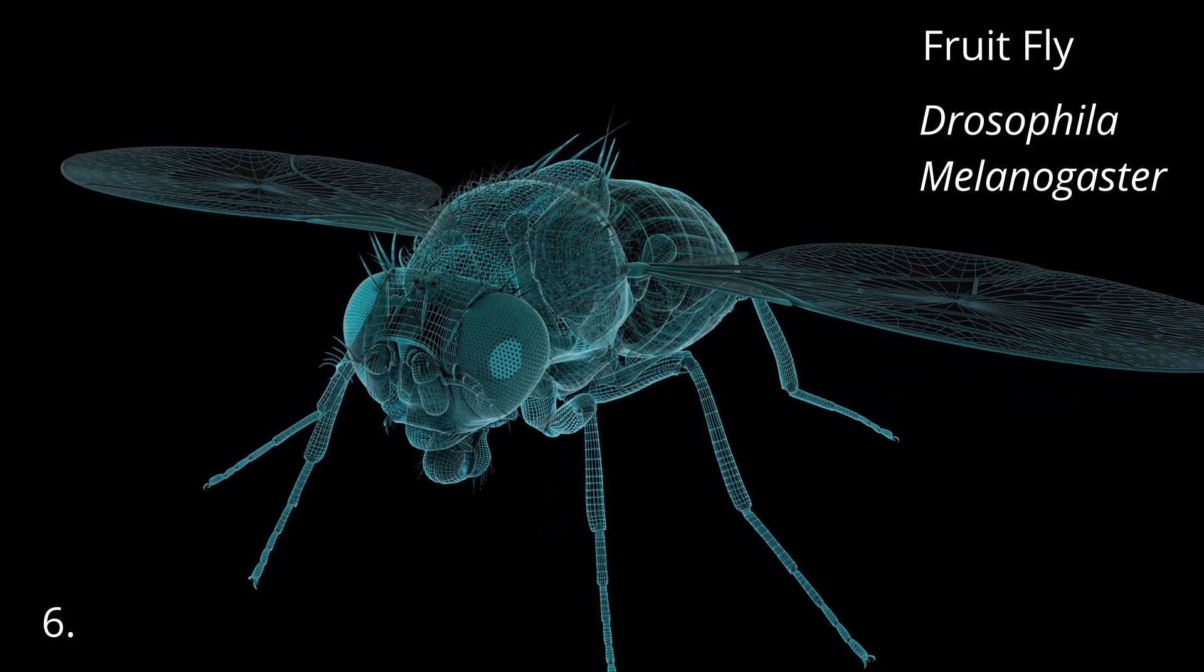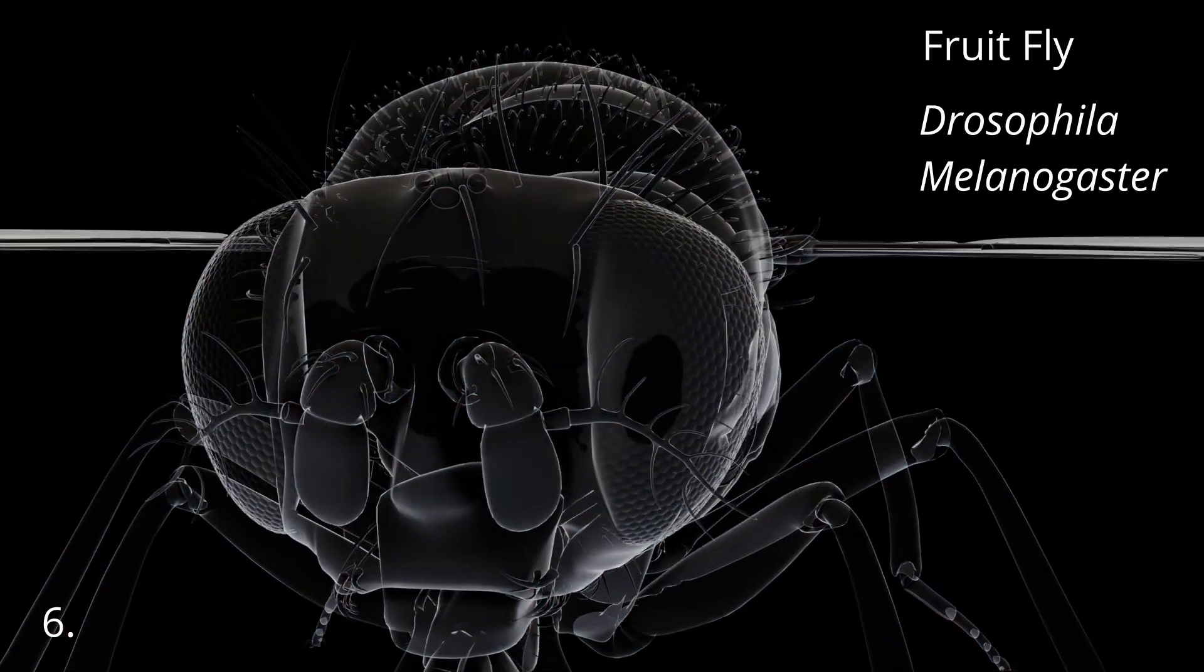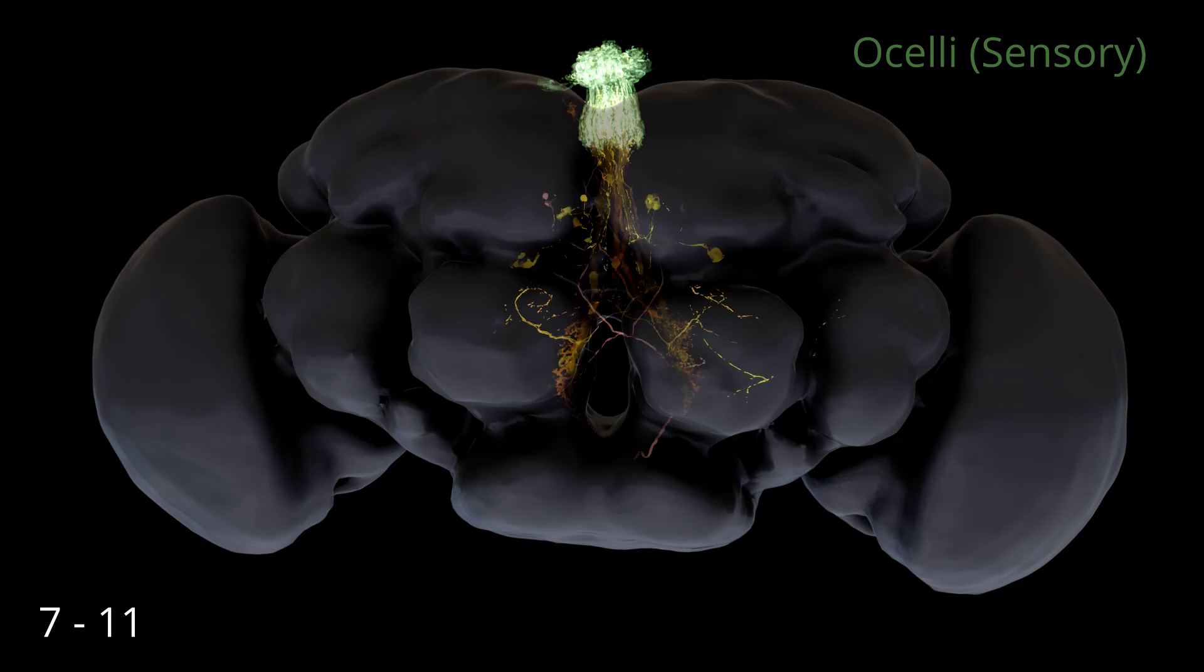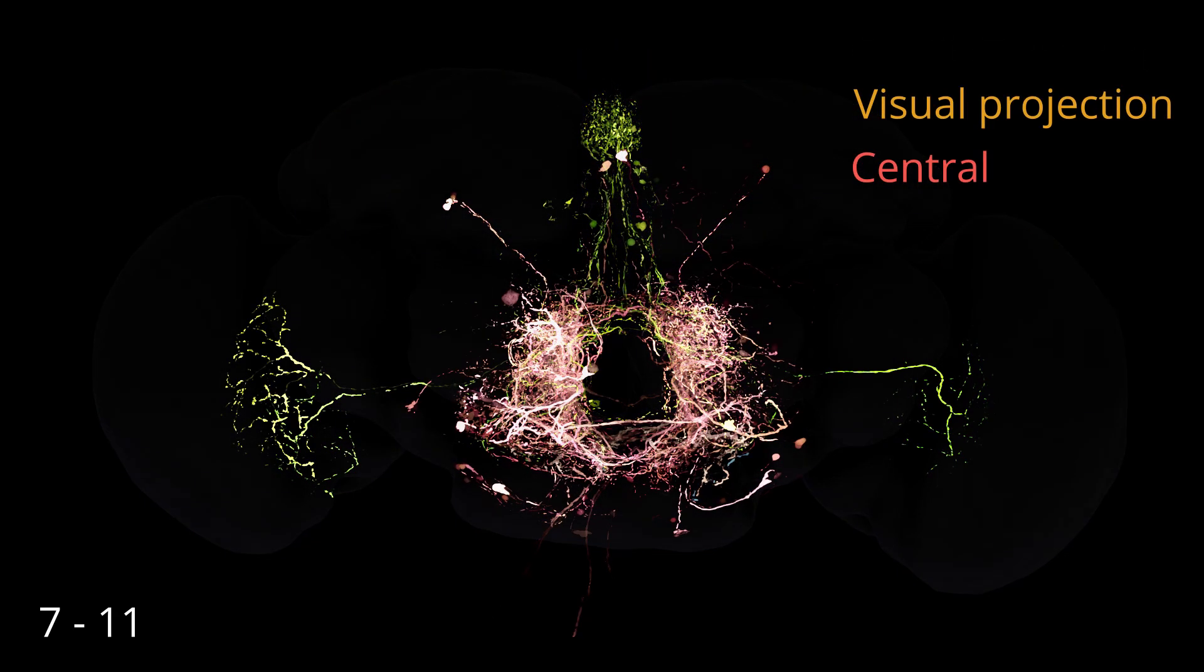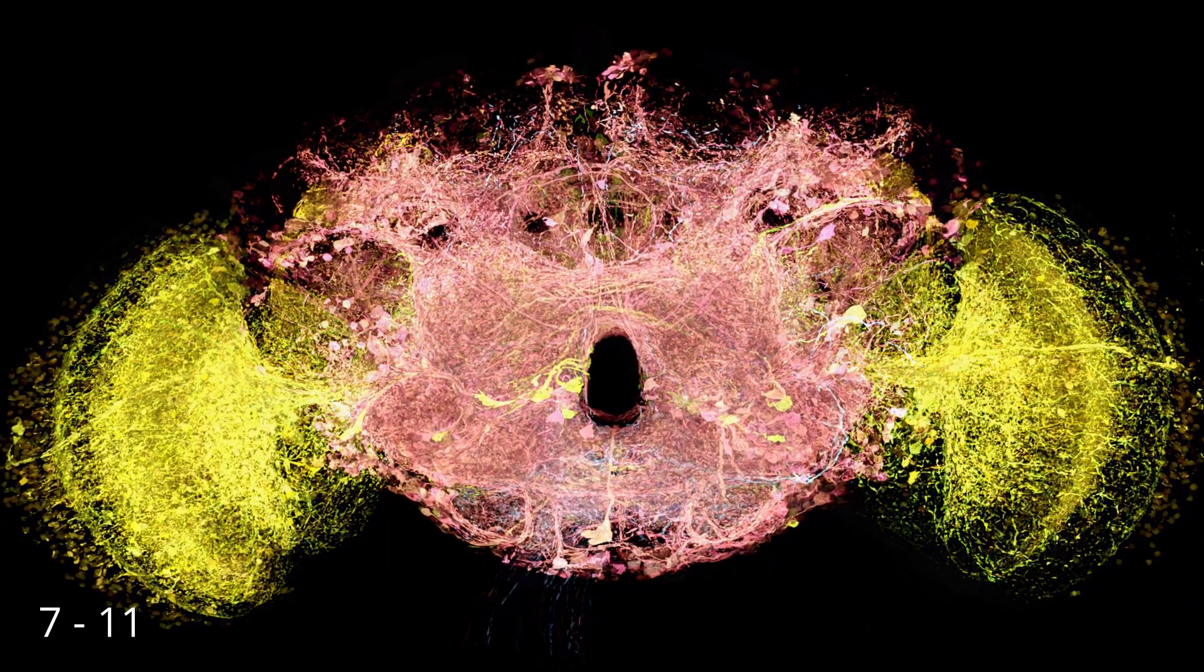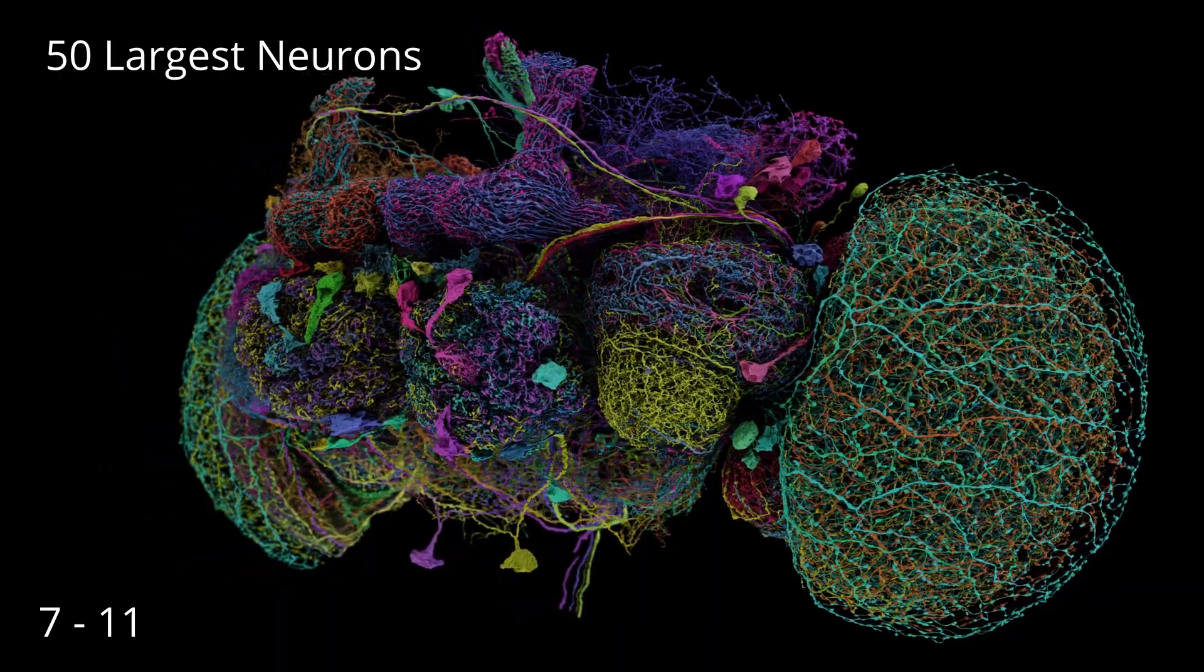Recently, the connectome of the entire fruit fly brain was revealed, including the strength and direction of information flow through a diversity of neural circuits. The connectome includes an extensive catalogue of classes and types of neurons in the fly brain.